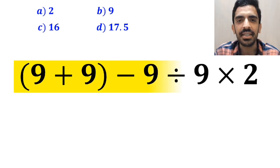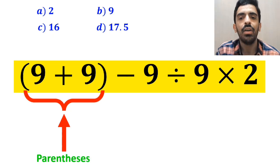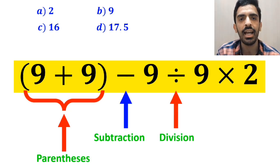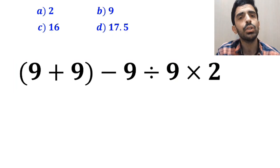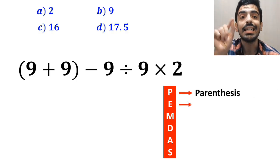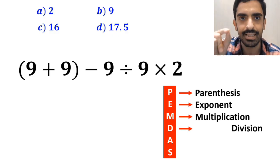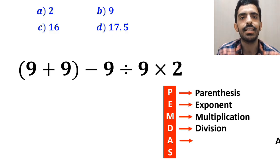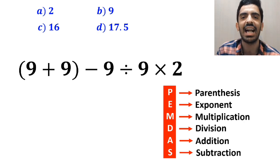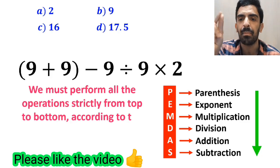Now let's solve this question step by step correctly. As you can see on the screen, this expression has a parenthesis, then a subtraction sign, followed by a division, and finally a multiplication. To solve this question, we need to follow the PEMDAS rule step by step: P stands for parenthesis, E stands for exponent, M stands for multiplication, D stands for division, A stands for addition, and S stands for subtraction. We must perform all operations strictly from top to bottom according to the PEMDAS rule.